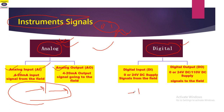Digital input means signal coming from the field to the PLC, and the digital input may be 0 or 24 volt DC or 110 volt DC. Digital output is the supply going from the PLC to the field. This is the basic difference between digital and analog, and input and output.